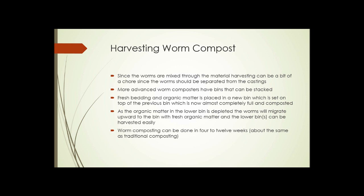After a couple of days, most of the worms will be up in the top. Take that off, remove the bottom bin because it's full of castings now. There will still be a few worms in it, but most of them will be in the top. Put the top bin back on your waterproof container, and take the other bin outside to your garden or wherever you're going to use it. Worm composting really can be done in 4 to 12 weeks, about the same time, a little faster to about the same time as traditional composting.